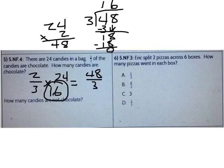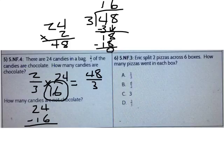How many candies are not chocolate? I know that there are 24 total candies and 16 of them are chocolate. What operation could I use to find how many are left that are not chocolate? I could subtract 24 minus 16. 14 minus 6 is 8, 1 minus 1 is 0. So the answer is 8 candies are not chocolate.